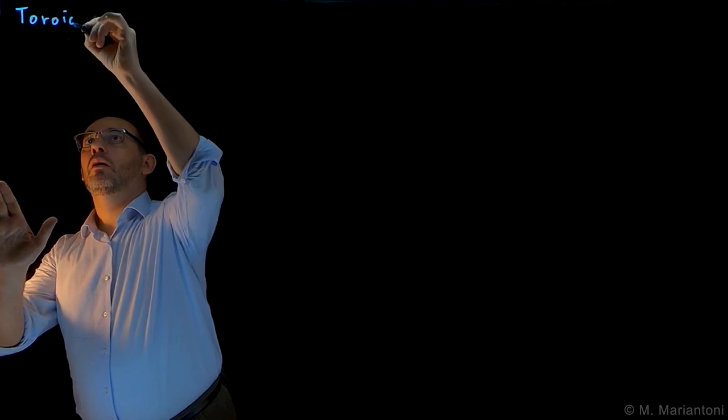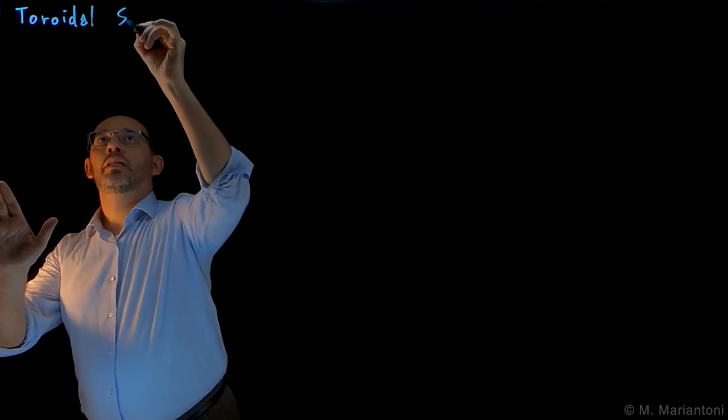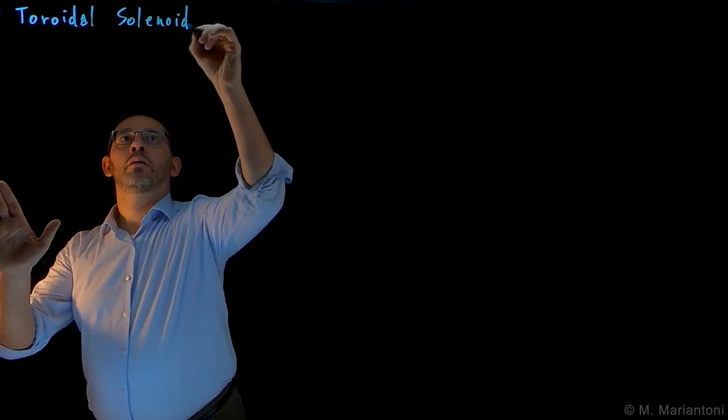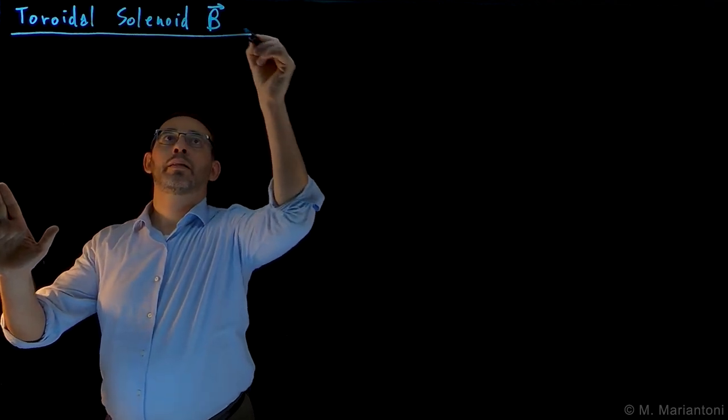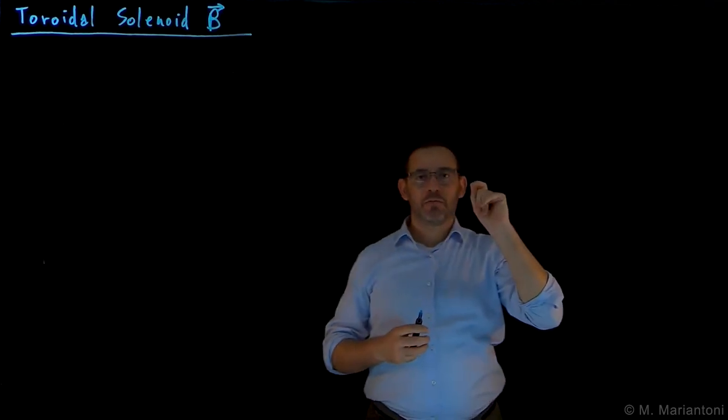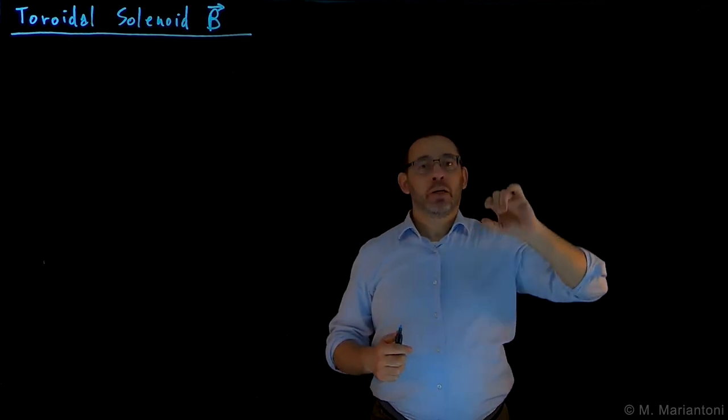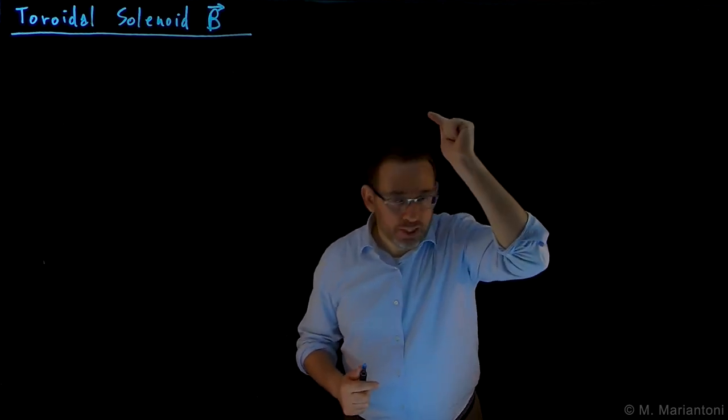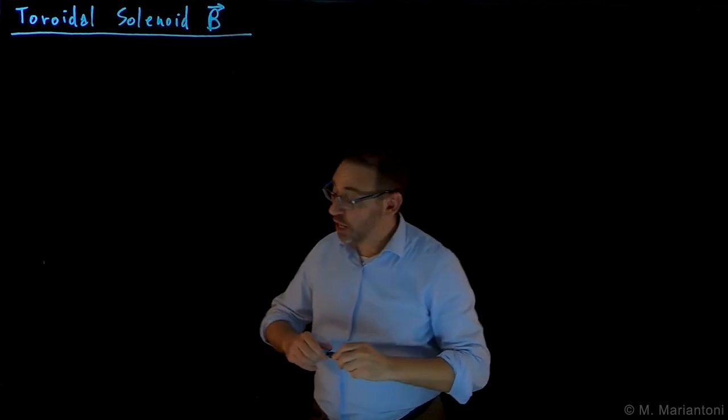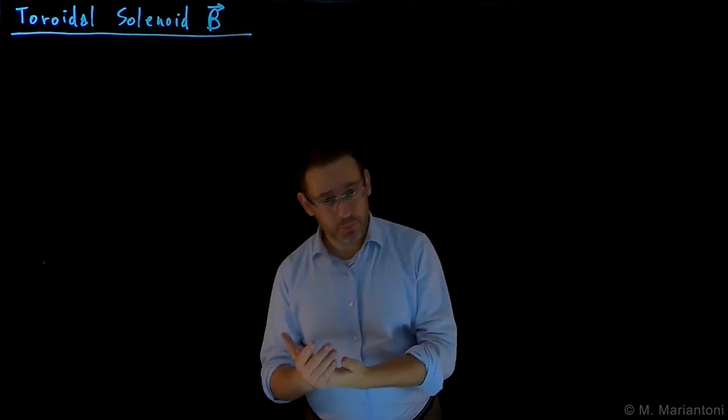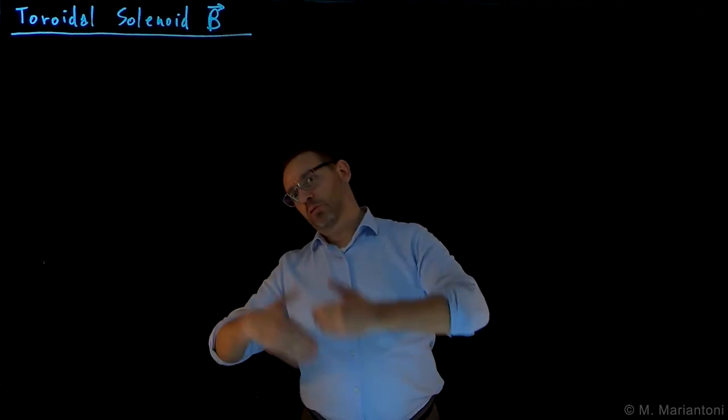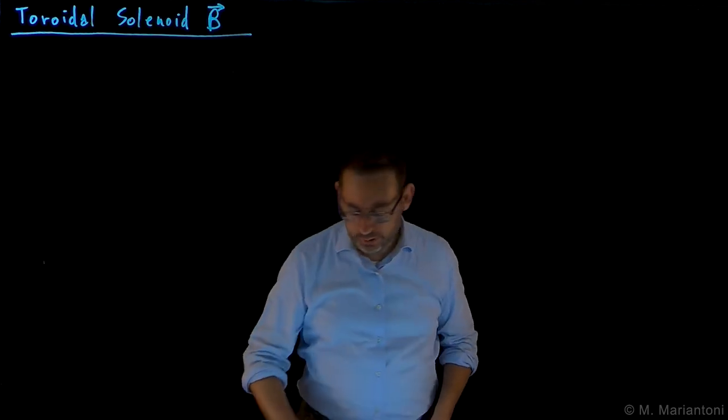The name of this video is toroidal solenoid B. We want to find the magnetostatic field B associated with the toroidal solenoid which carries a DC or steady current I with vector density J. We already know what are the two symmetries. We want to use symmetry arguments and Ampere's law, which is similar to symmetry arguments and Gauss's theorem in the case of electrostatic fields.